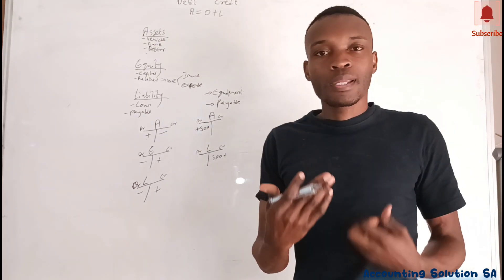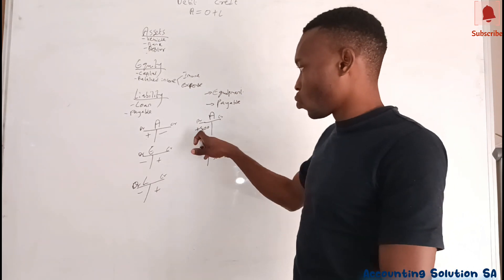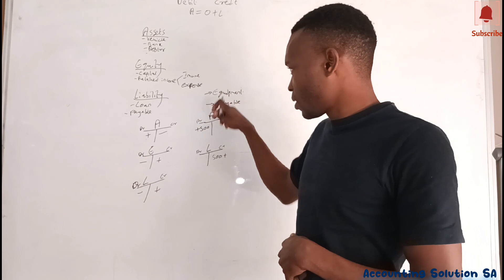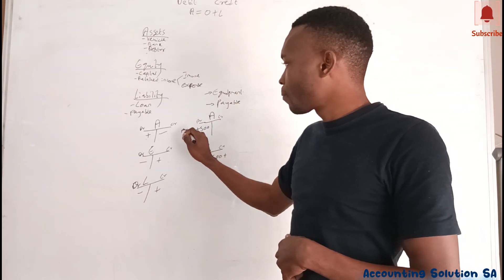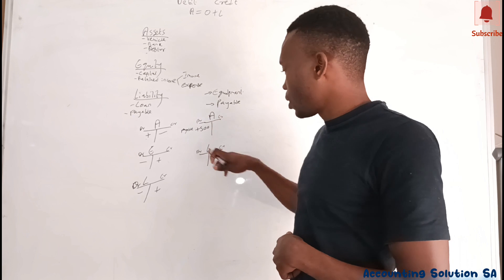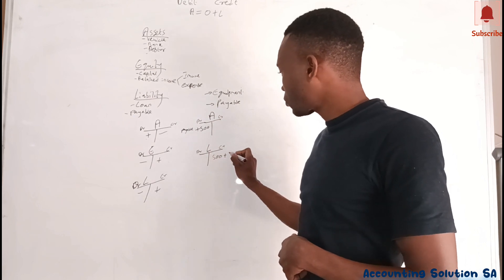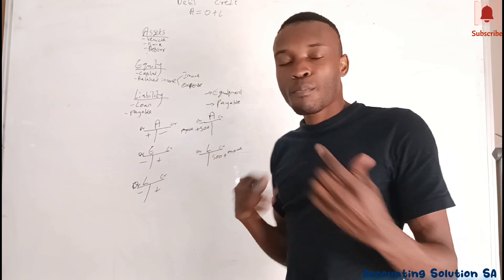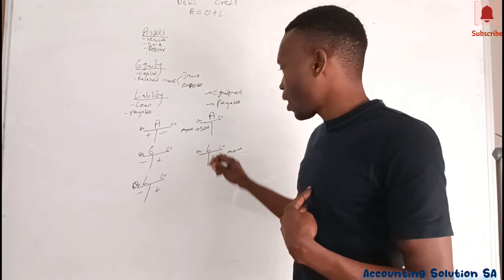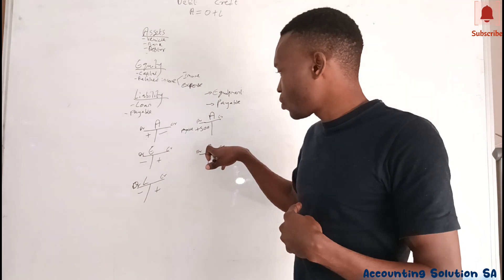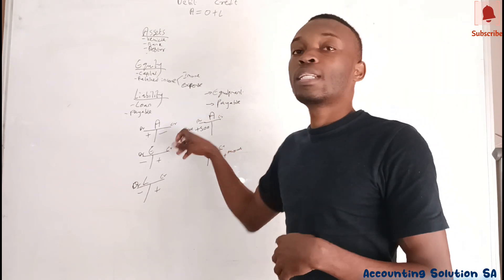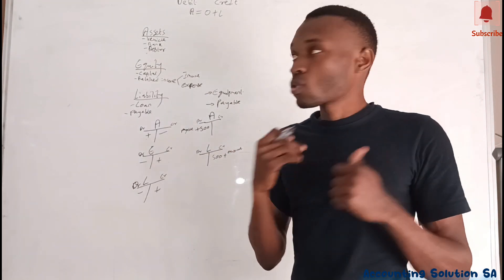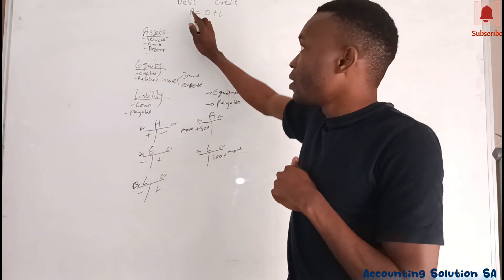If you are preparing a ledger account, this is what you do: under the equipment account, you write 'payables' on the credit side, and under the payables account, you write 'equipment' on the debit side. You just swap the names — it's very simple.